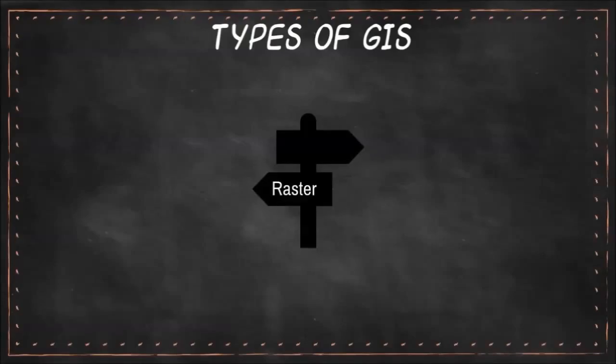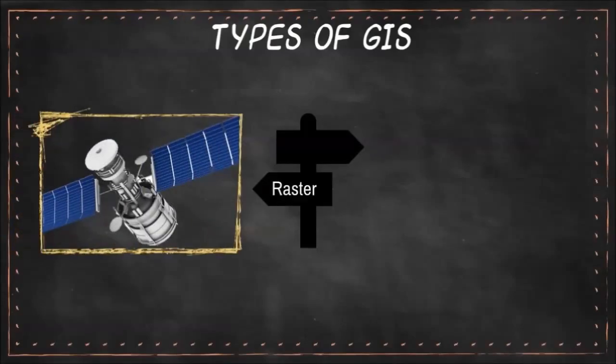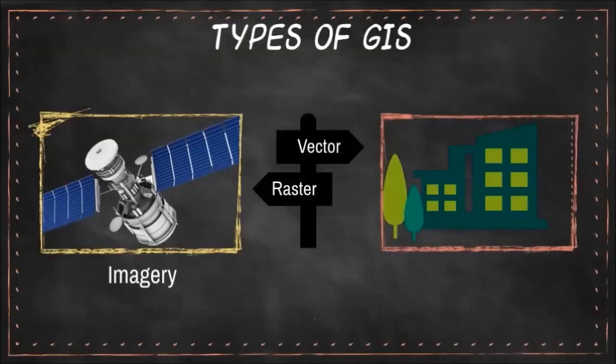There are two basic types of GIS information. Raster, like pictures from satellites, which we call imagery. And vector, any information with geographic coordinates, which we'll call everything else for now.